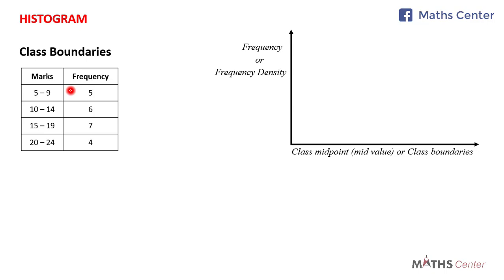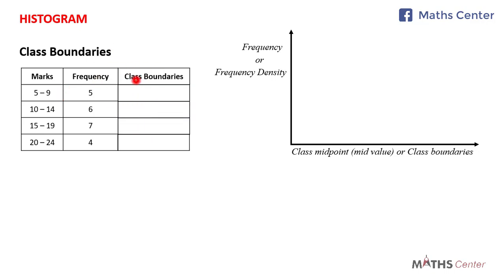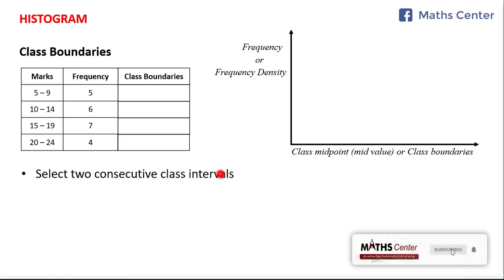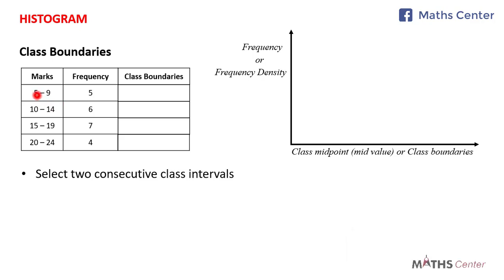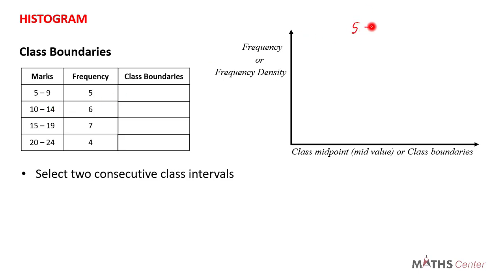Now let's learn how to find class boundaries using the same example. The first thing you need to do is select two consecutive class intervals. For example, 5 to 9 and 10 to 14, or 10 to 14 and 15 to 19, or 15 to 19 and 20 to 24 — the two intervals must be consecutive. I'm going to select 5 to 9 and 10 to 14.